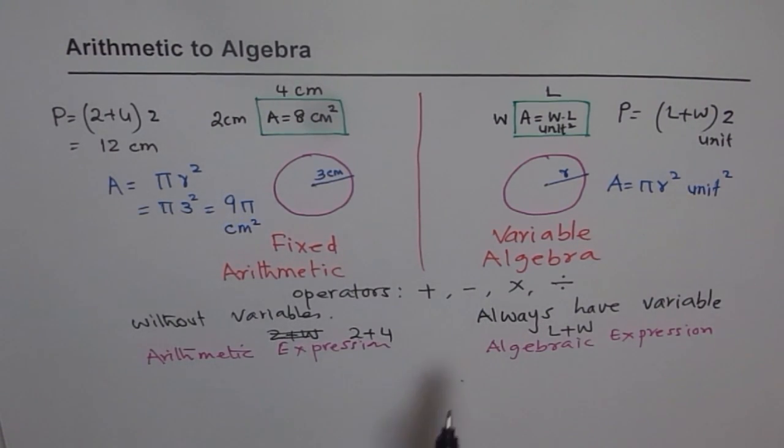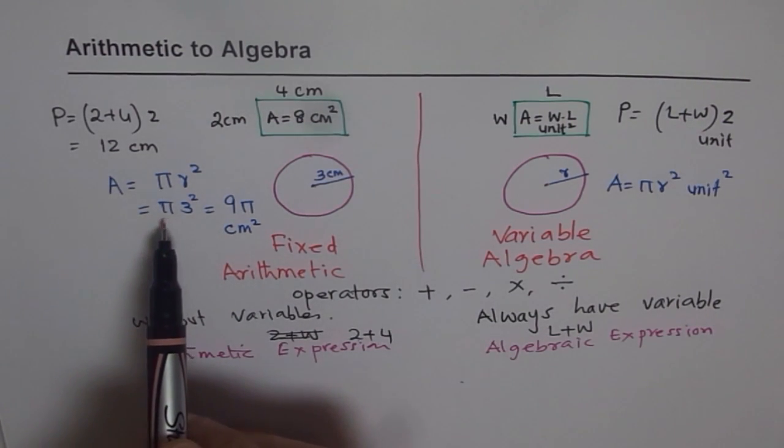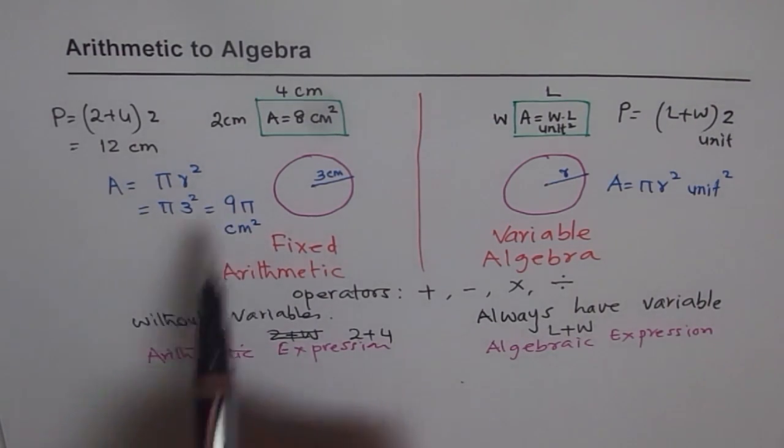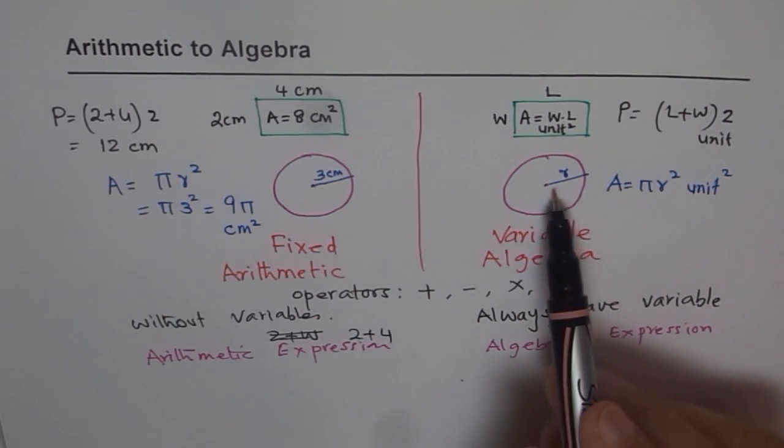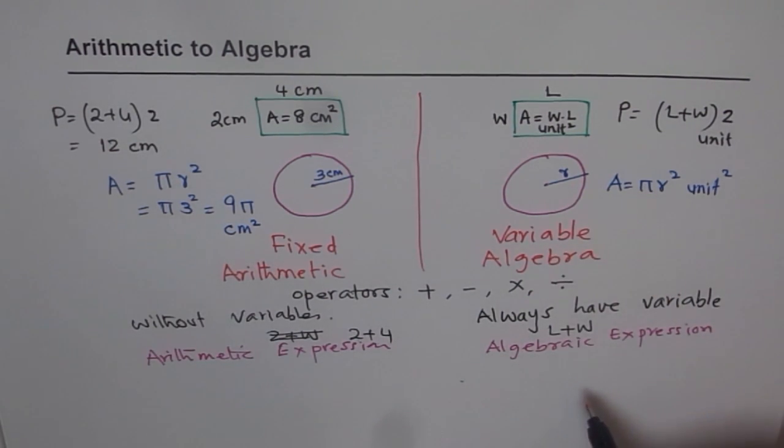So in arithmetic expressions, we have numbers, additions, multiplication, things like that. For example, here you saw pi is a constant. Pi is not a variable. 9 pi, 9 times pi. Now in this case, we have a variable R. R could have any value. That makes it algebraic expression.